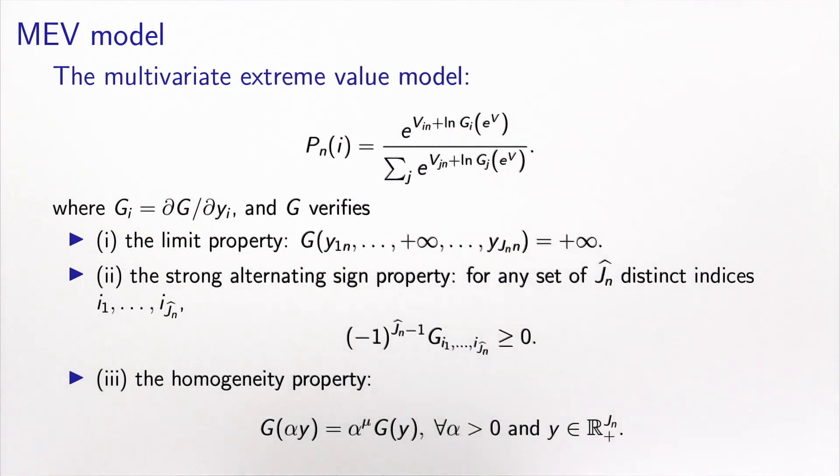And now we use the MEV framework. So this is a reminder of the MEV framework. The MEV models are derived from a probability-generating function capital G, which has three properties: the limit property, the strong alternating sign property, and the homogeneity property. From this capital G function, we can derive the choice model using this formula here.